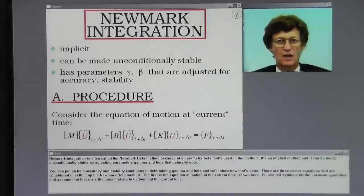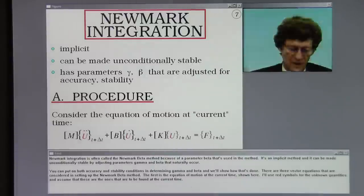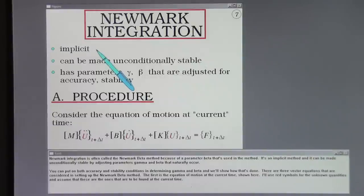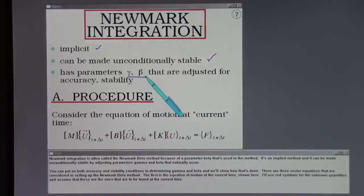Newmark integration is often called the Newmark beta method because of a parameter beta that's used in the method. It's an implicit method and it can be made unconditionally stable by adjusting parameters gamma and beta that naturally occur. You can put on both accuracy and stability conditions in determining gamma and beta.